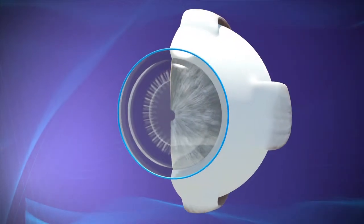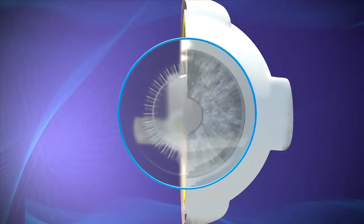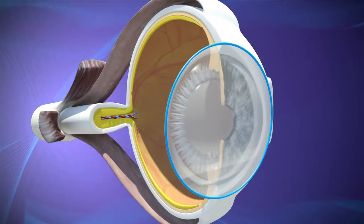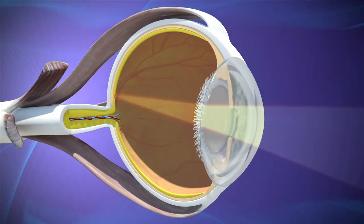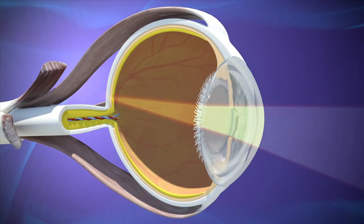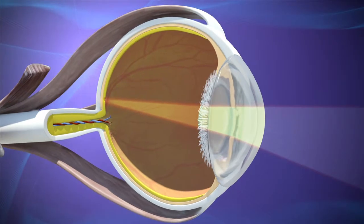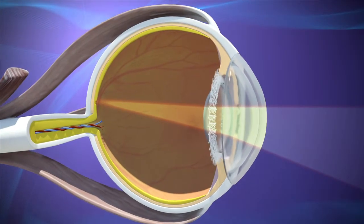With a healthy normal eye, the shape of the cornea is spherical, like a round globe. This allows light to pass through the lens without distortion. Light rays focus properly on your retina to provide a sharp image of what you are seeing.